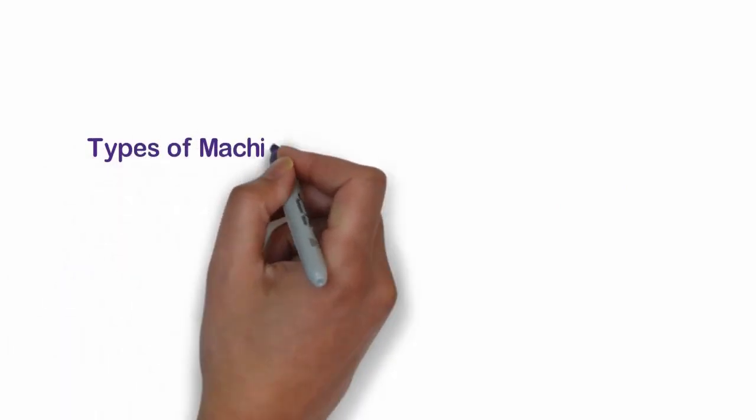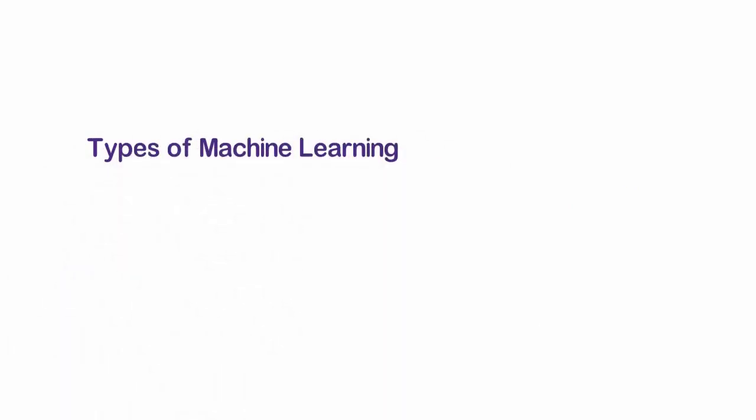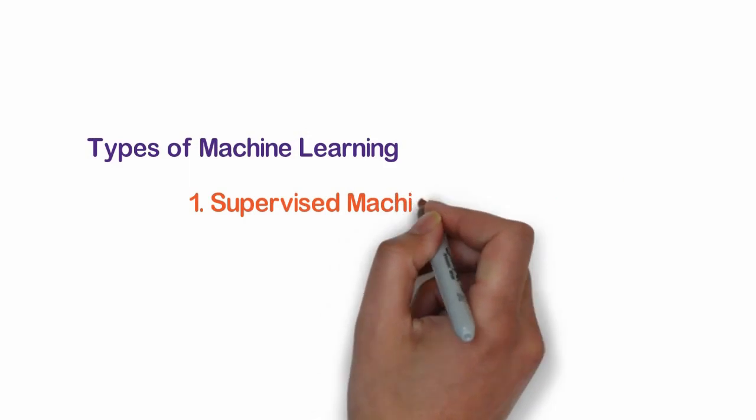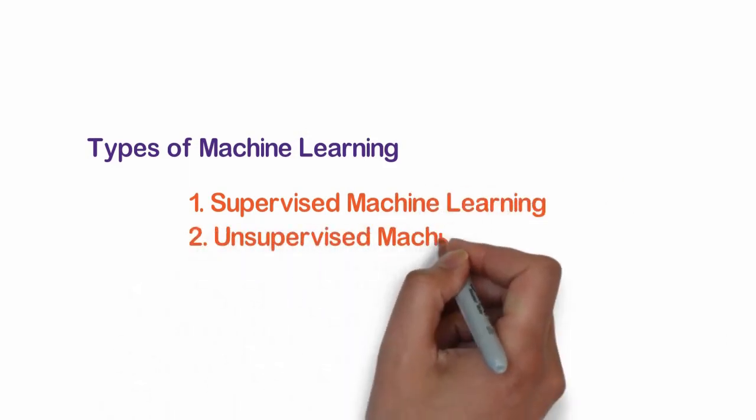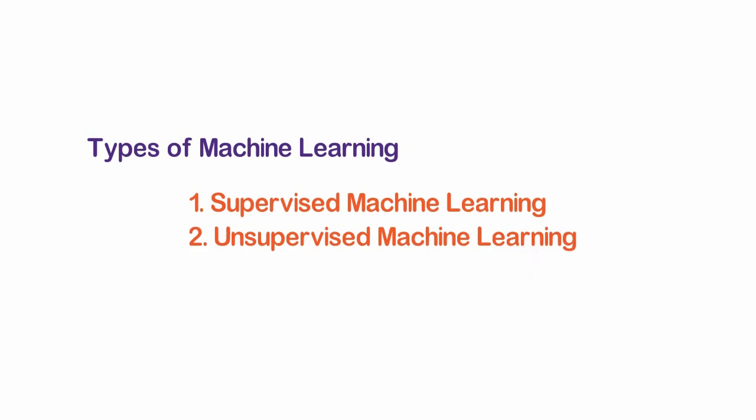Types of Machine Learning: Supervised Machine Learning and Unsupervised Machine Learning. First, we will look at supervised machine learning.